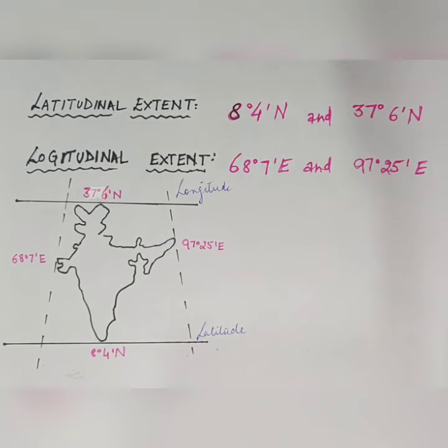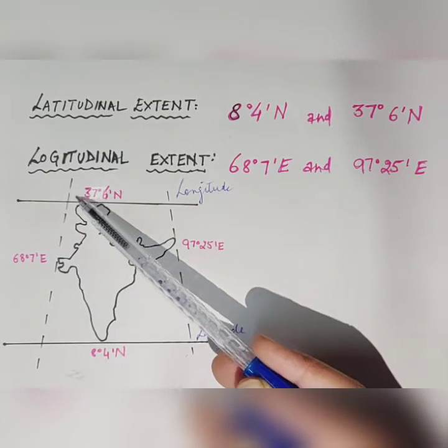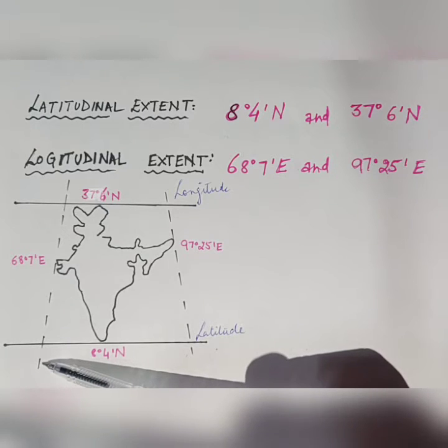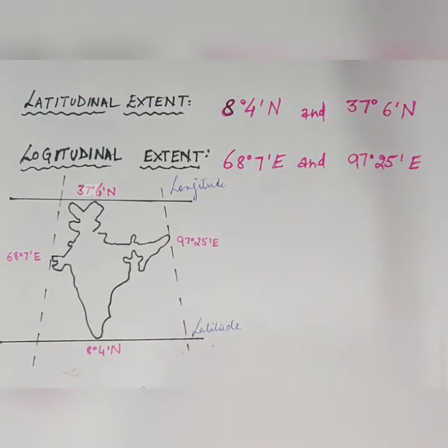On the other hand, the longitudes are the two longitudes between which the Indian mainland is lying, which is 68 degree 7 minutes east and 97 degree 25 minutes east. In our chapters we will be learning the basic concept of the latitude and the longitudinal extent. But today we are referring to and learning a trick. Let's have a look.